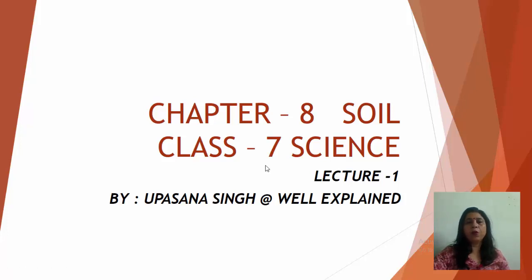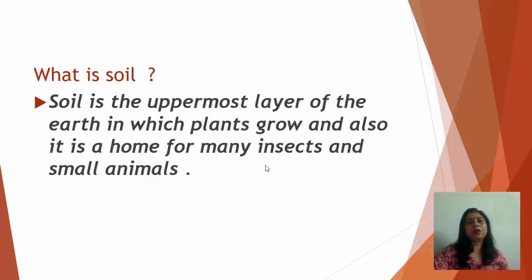Hello students, welcome to Well Explained. Today I am here for Class 7 Science, Chapter 8: Soil. So students, what is soil? Soil is the uppermost layer of the earth in which plants grow, and it is also a home for many insects and small animals. Whatever you see on the ground, the uppermost layer is the soil, and it is in this soil that we grow plants, and many insects and small animals such as rabbits live here.